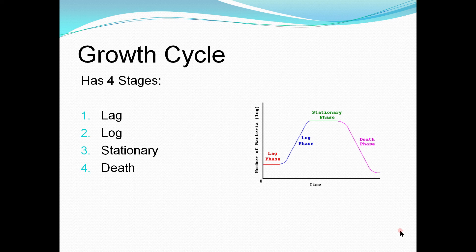The bacterial growth cycle is divided into four important stages: the lag phase, the log phase, the stationary phase, and the death phase. A tip to remember the order is alphabetical: 'a' in lag comes before 'o' in log alphabetically, so lag comes first.